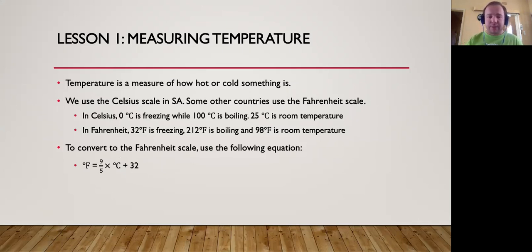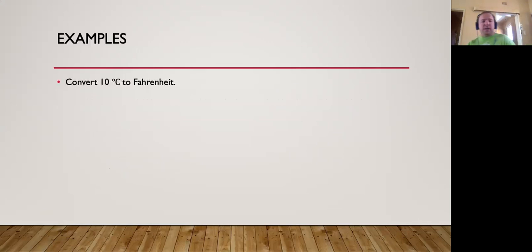Example: convert 10 degrees Celsius to Fahrenheit. We're going to use the formula. We're going to change the degrees Celsius here to 10. So you can say 9 over 5 times 10 plus 32. Put it on a calculator and you'll find that this turns out to be an answer of 50 degrees Fahrenheit.